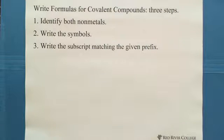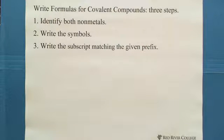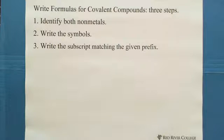The first step is to identify both non-metals — this is the most important. Both elements are non-metals. Second, write the symbols. The third is write the subscript matching the given prefix. For covalent compounds, when naming them, we put a prefix to match the subscript. The subscript and the prefix, we follow a table.